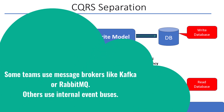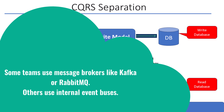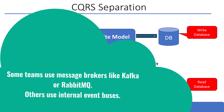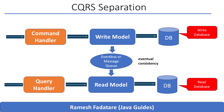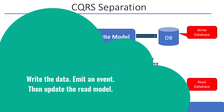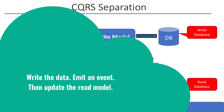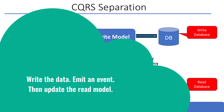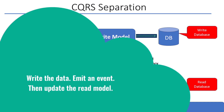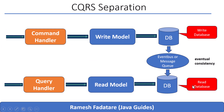Some teams use message brokers like Kafka or RabbitMQ; others use internal event buses. Whatever tool you choose, the idea is the same: write the data, emit an event, then update the read model. The read model stays simple, fast, and scalable.